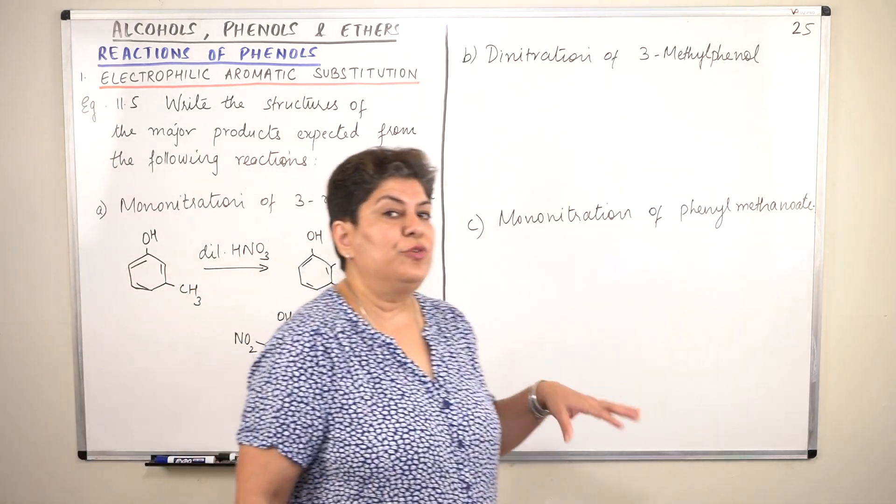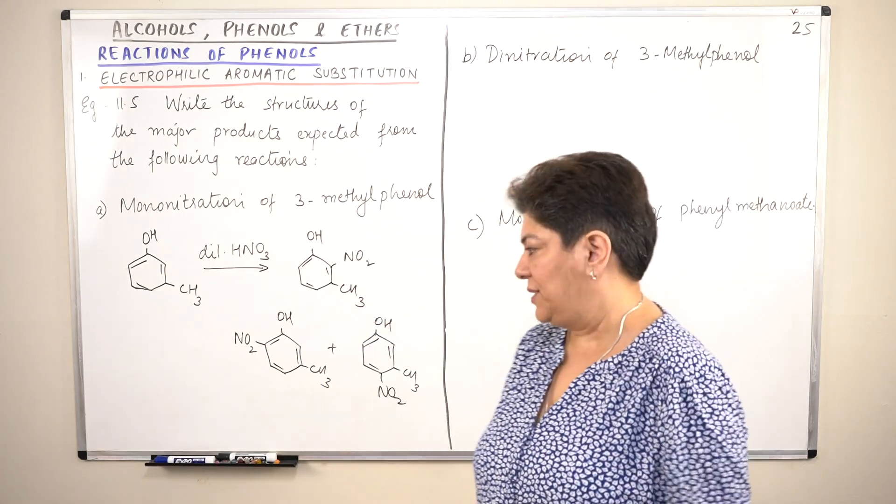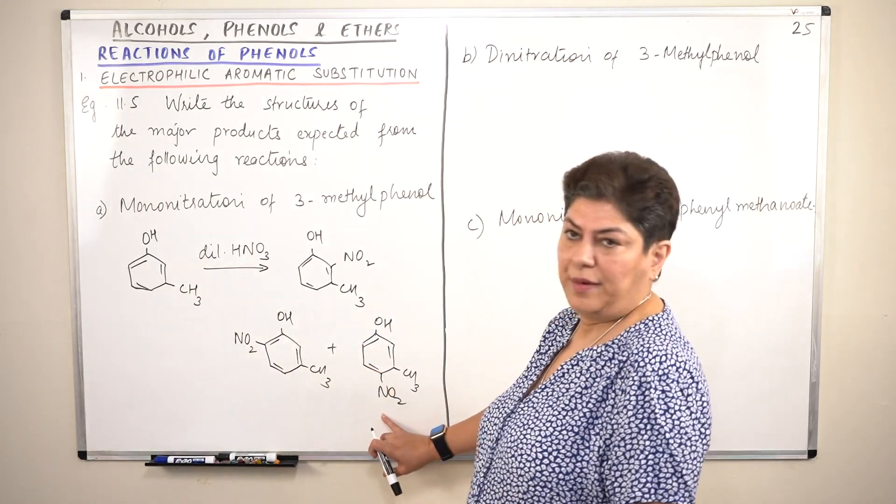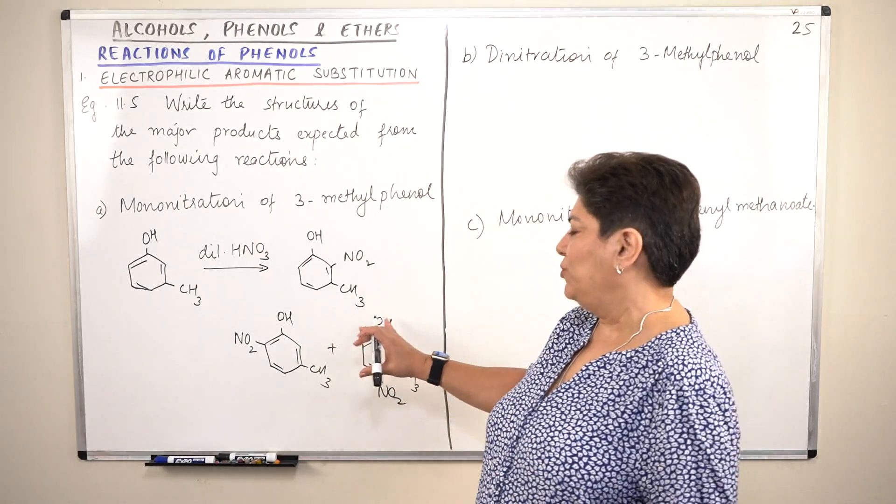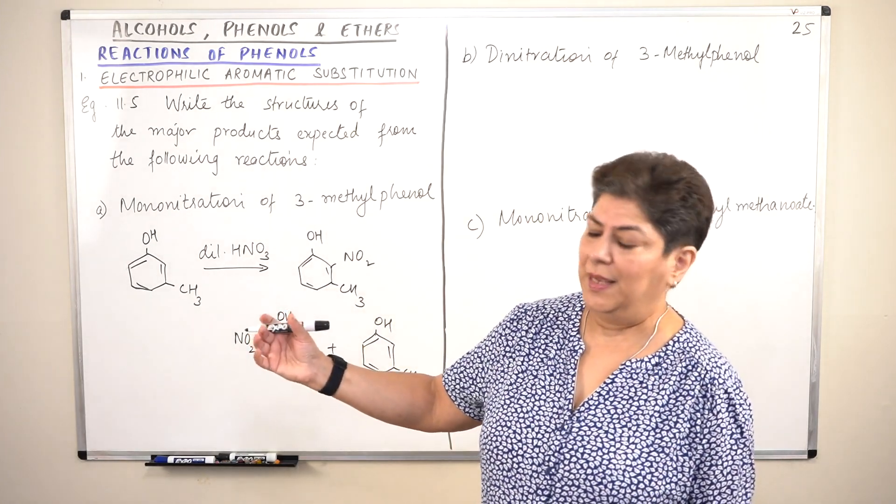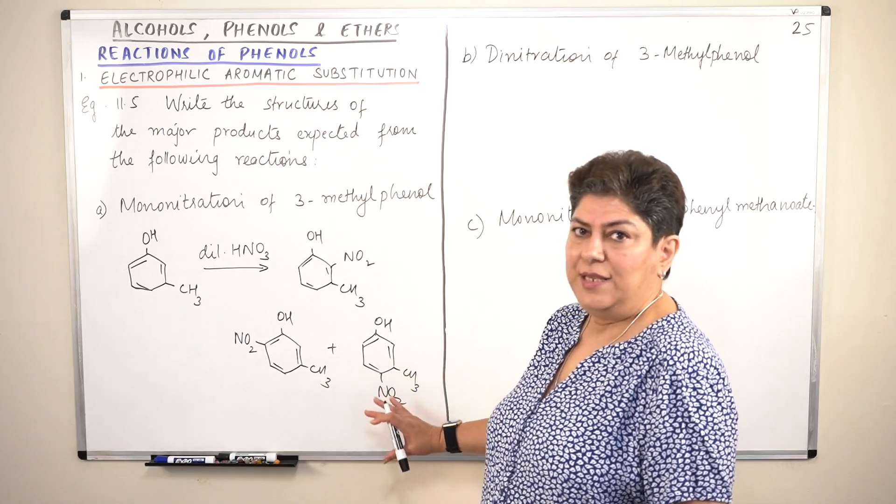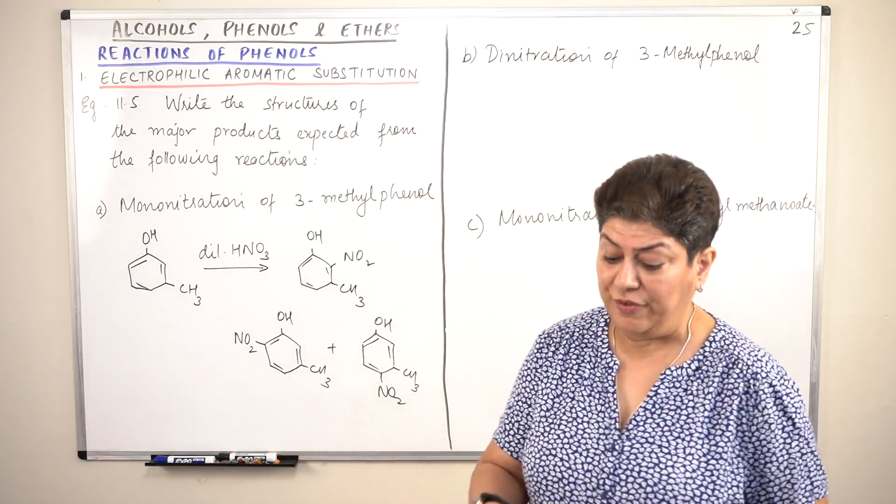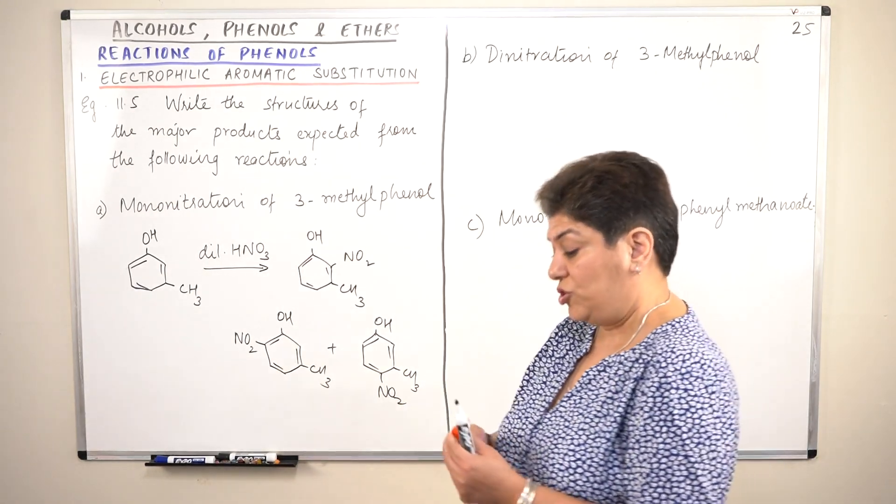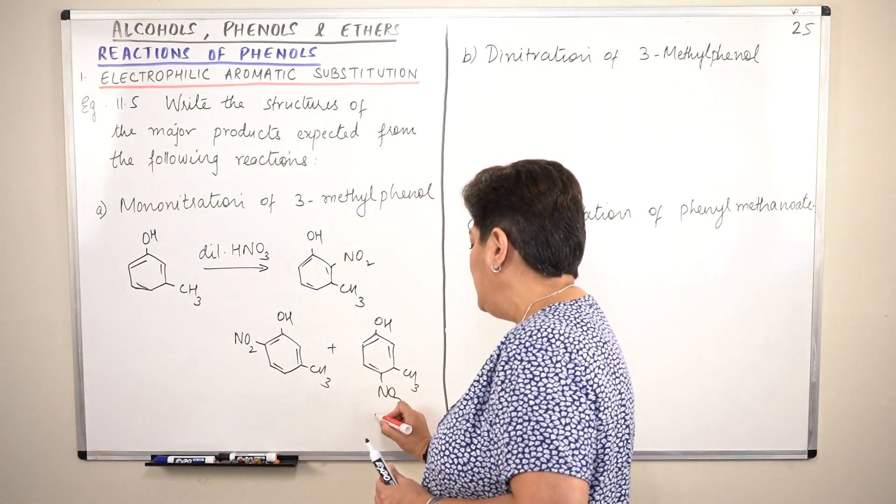Now tell me which out of these do you think would be the major products? Always para, because para has the nitro as far away from the OH as possible, and the effect of methyl is not as much because the methyl is on a side. So this would definitely be one of the most maximum. It is the major product.